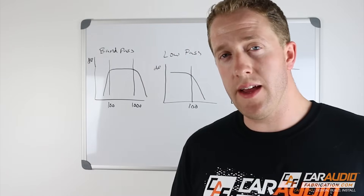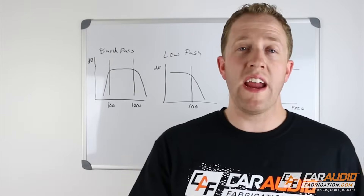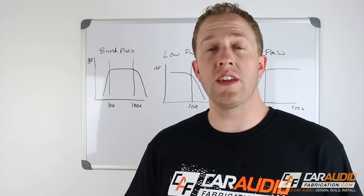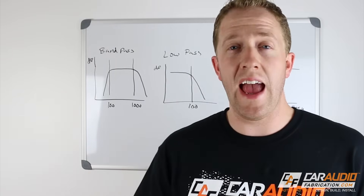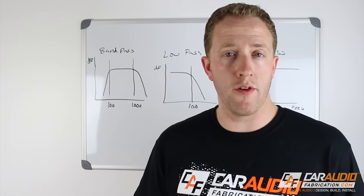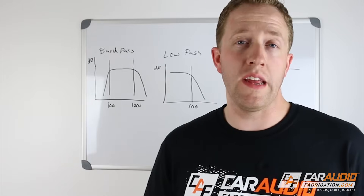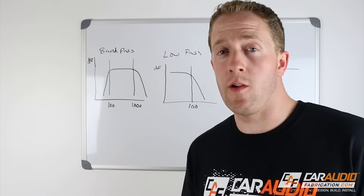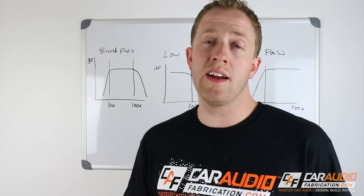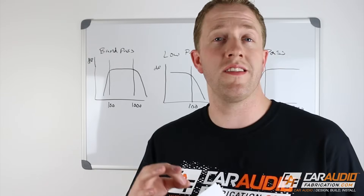This is where we need adjustability and an active crossover comes into play. An active crossover is usually a device that goes in between the radio or source unit and the amplifier. Most all digital signal processors include the ability to control crossovers in an active manner. Additionally, most amplifiers now give us the ability to control the crossover point. With active and adjustable crossovers, we have the ability to actually control more of our tuning, we don't lose any power, and most of the time we can also attenuate the signal between two different speakers to better level match tweeters to mid-range to mid-bass to subwoofers.